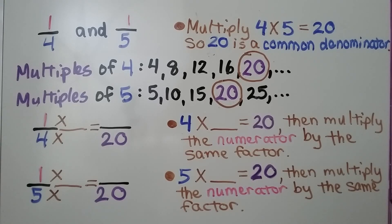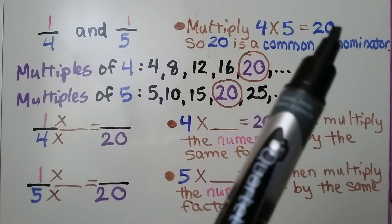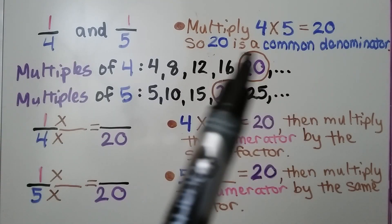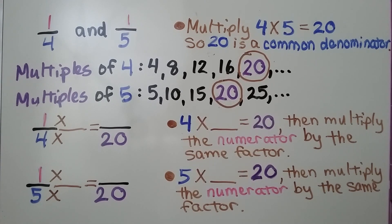Here we have the fractions 1/4 and 1/5. We can just multiply the denominators: 4 times 5, that's 20, so 20 is a common denominator for these two fractions.